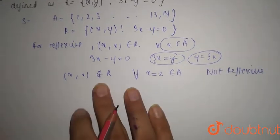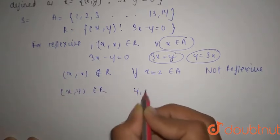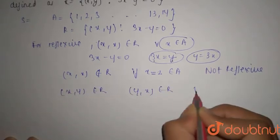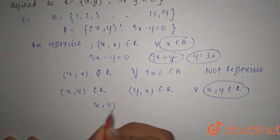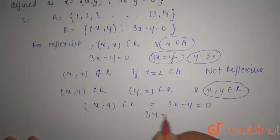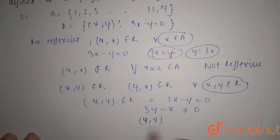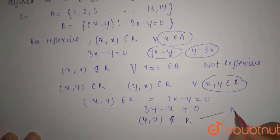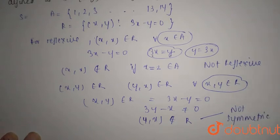Now, what about symmetricity? You can say that x, y belongs to R and y, x belongs to R where x, y belongs to R. So you can say that 3x minus y equals 0 and 3y minus x is not equals to 0. That is why you can say that y, x does not belong to R. So R is not symmetric.